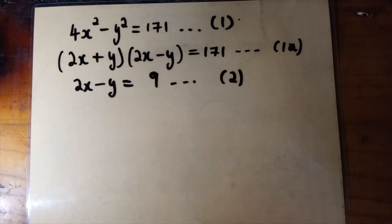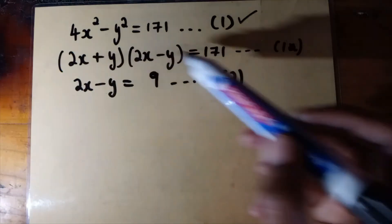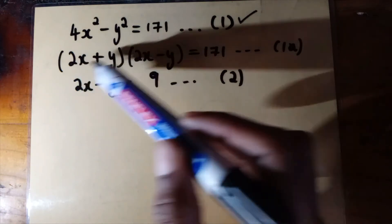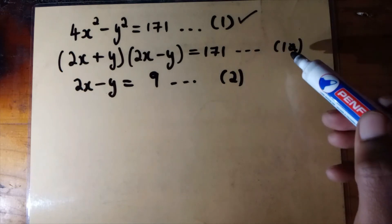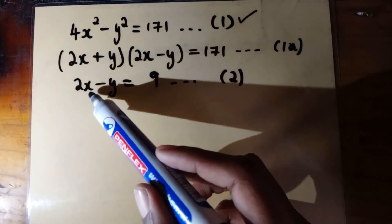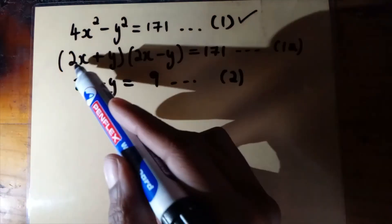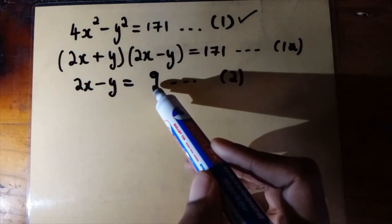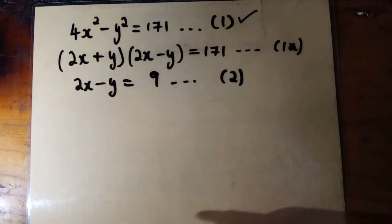Quick recap: we had equation 1, which is 4x squared minus y squared equals 171. We factorized the left hand side because it was a difference of two squares, giving us equation 1a: (2x + y)(2x - y) = 171. We also have equation 2: 2x minus y equals 9. Our next step is to solve for 2x plus y. Since we know 2x minus y equals 9, we can substitute that value into equation 1a.